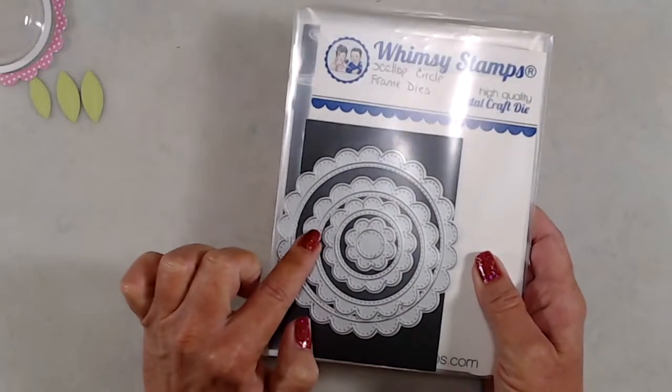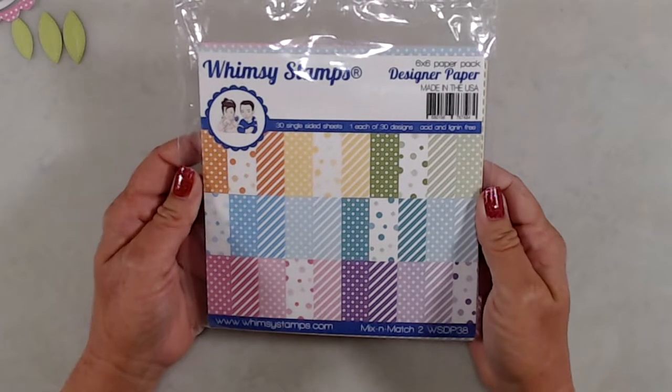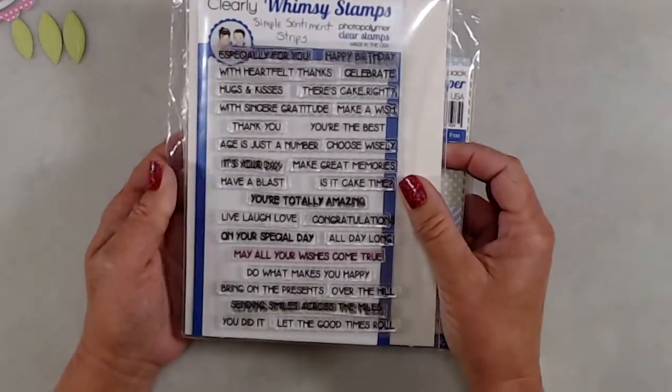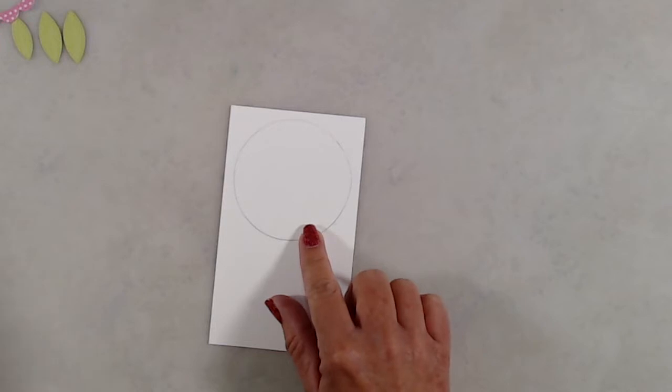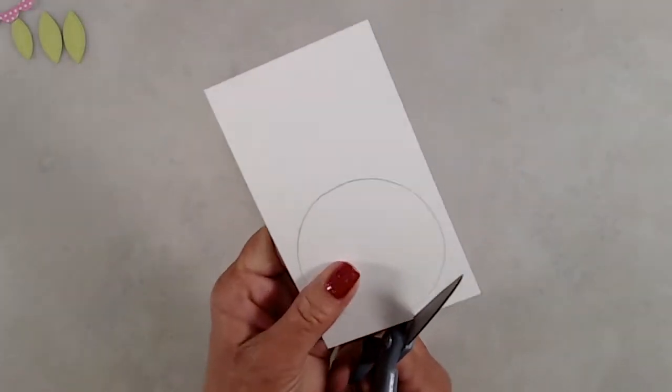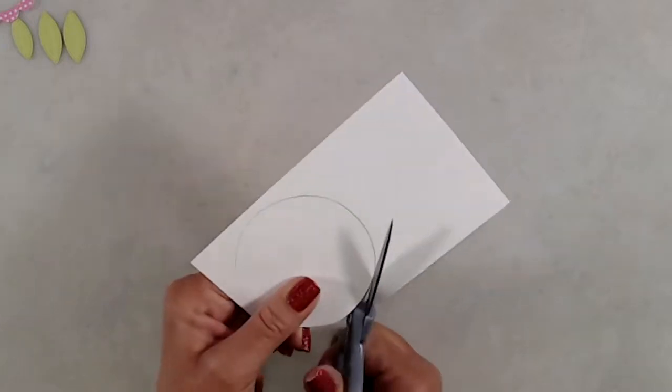I'm using the Cozy Winter Mix, the scallop circle frame dies, the No-See All Season Tree die set, the Mix and Match Two paper pack, as well as the Simple Sentiment Strips stamp set. I traced around one of the bobble bubbles onto a piece of white cardstock and just did a really rough cut with my scissors. It didn't need to be perfect; I just wanted it to cover the back of it so that it would hold my sequin mix in place.